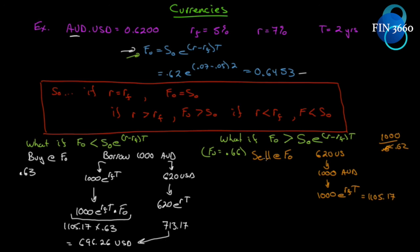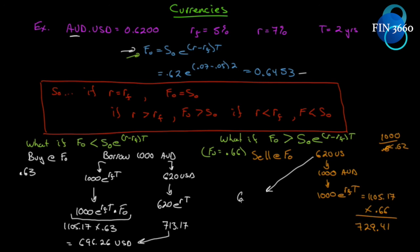I'm short a futures contract, which means I must deliver the underlying at the rate of 0.66. How many US dollars will I get? Because I'm long 1,105.17, if I multiply it by 0.66, this gives me $729.41. So I got $729.41 US by buying Australian dollars, having it grow at a certain rate, and then locking in that exchange rate to bring it back into US. But my $620 loan in US dollars has grown at the rate R×T, which we've already figured out — it's $713.17.